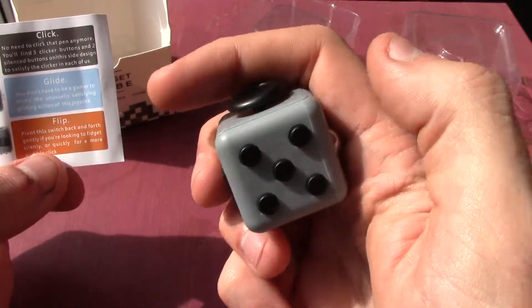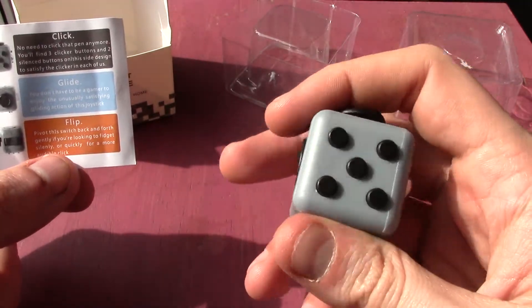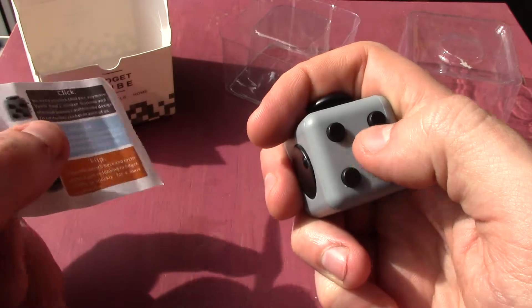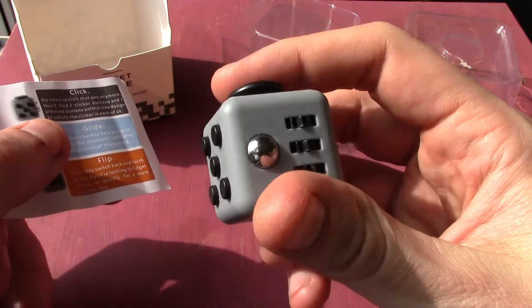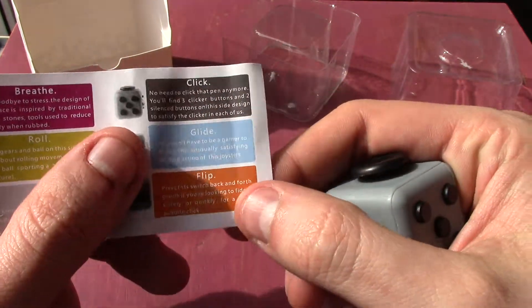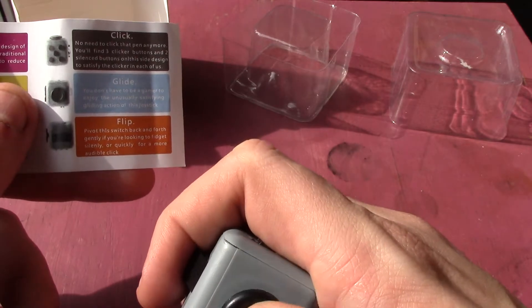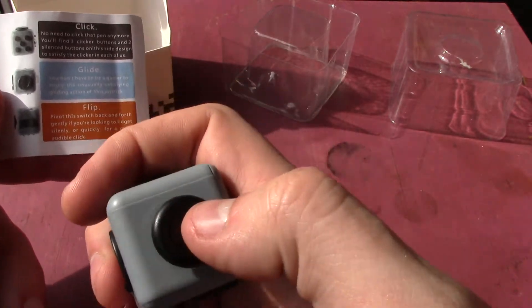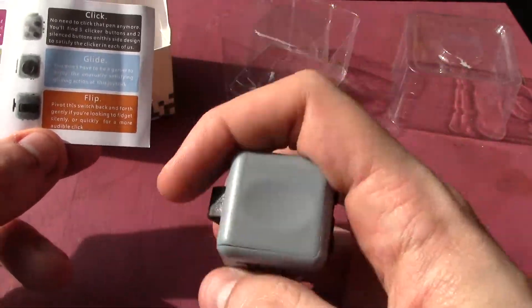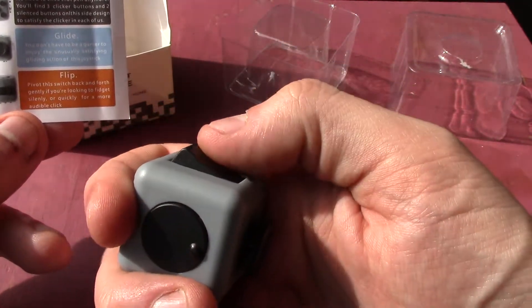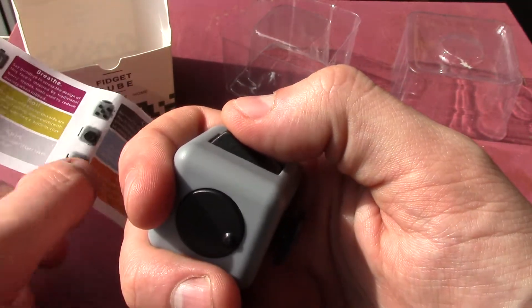It would be good to have some silent ones because when you're walking around and you've got things in your pocket, I have this in my coat pocket and I've got my hand in my pocket and you don't want to be making a random clicking noise as you're walking around. Glide is the analogue stick. You don't have to be a gamer to enjoy the unusually satisfying gliding action of this joystick. And flip.